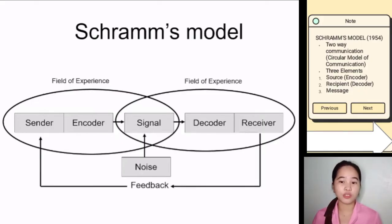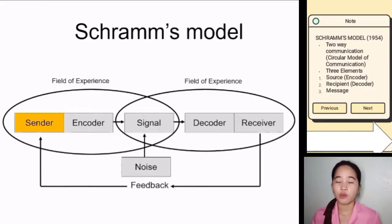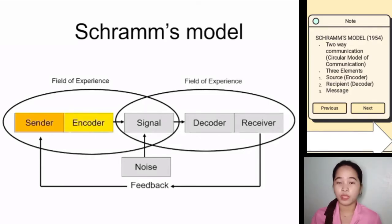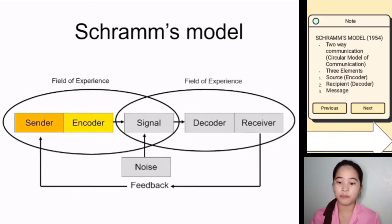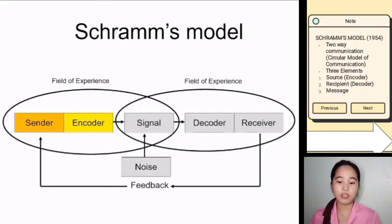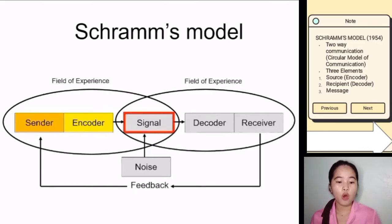Schramm's model helps us articulate what happens in communication. Communication starts with the sender or the source, which is the first element in Schramm's model — that's the person who initiates the communication. In this case, that's me. I'm encoding the communication into spoken and written English with some visual signals. Encoding means it gets encoded into some format to be transmitted as a signal.